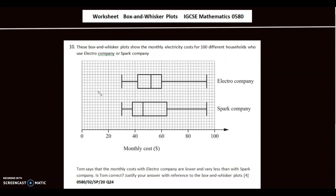Next is a question from the specimen paper. The box and whisker plot shows monthly electricity costs for 100 different households using Electro Company or Sparco Company. Tom says that the monthly costs with Electro Company are lower and vary less than with Sparco. Let's check the medians: Electro Company's median cost is around $52, and Sparco Company's median is $43.